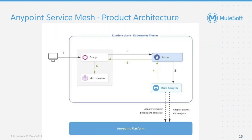Let's see how an external request is handled by the sidecar proxy, the mixer, and the Mule adapter. When an external request comes in to call a microservice, it is first routed to the sidecar proxy — it doesn't hit the microservice yet. Then the request is sent to the mixer and forwarded to the Mule adapter. The Mule adapter reaches out to the Anypoint platform to validate if any policies are applied, and this information is shared back to the proxy via the mixer. The sidecar proxy is responsible for controlling traffic to the microservice. For example, if a client ID enforcement policy is enabled, the sidecar proxy will not give access to consumers who do not have a client ID in the request. If it is a happy path and consumers provide all required information, the sidecar proxy manages all traffic to the microservice. The microservice is only focusing on the business logic.